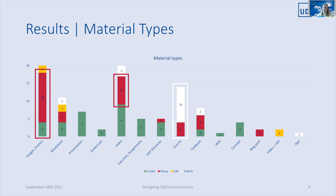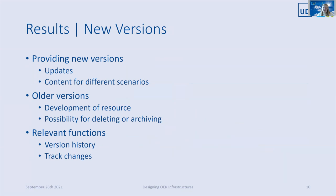In front of this background, on OER platforms it should be possible to divide extensive materials into individual thematic units or formats. Lecturers consider the provision of new versions to be useful and sensible, also in terms of quality assurance and for different scenarios. Reasons given for the availability of different versions include that changes over time can be shown and different editing scenarios can be provided. Likewise, deleting or archiving older versions should be possible to maintain freedom of choice, so that incorrect versions do not remain in circulation. When presenting different versions, an overview in the form of a version history is desired, and it should also be possible to track changes between versions.